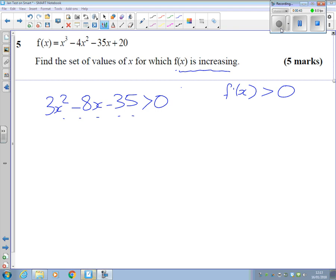Just tap it in the calculator, and the calculator tells you that x is lower than minus 7 thirds, comma, x is greater than 5.